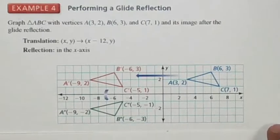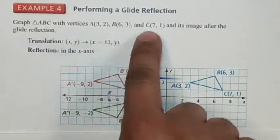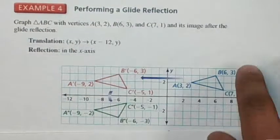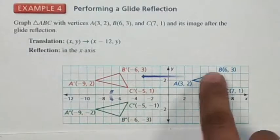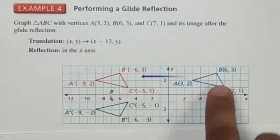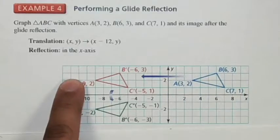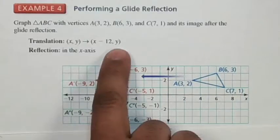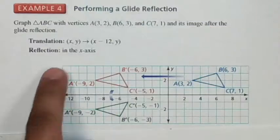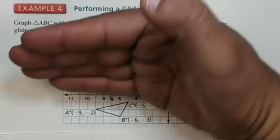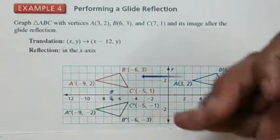Example 4 illustrates a glide reflection. We have triangle ABC with vertices (3, 2), (6, 3), and (7, 1). We start by translating the triangle — moving it back 12 units in x with no change to the y-value — to get A prime, B prime, C prime. Then once we have that translated image, we reflect it across the x-axis, bringing it down to produce the final image A double prime, B double prime, C double prime.